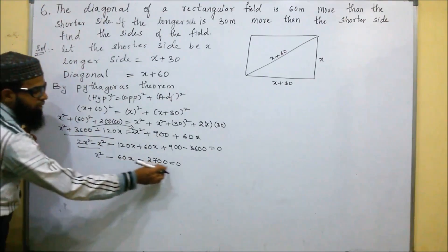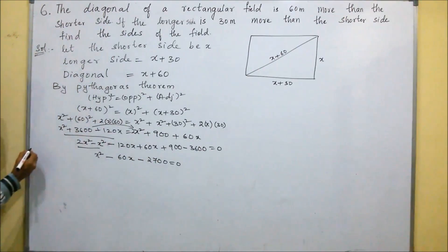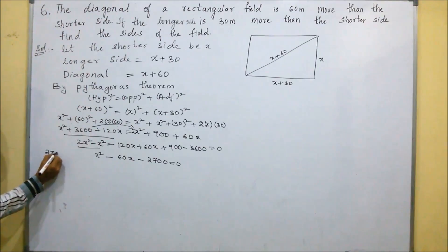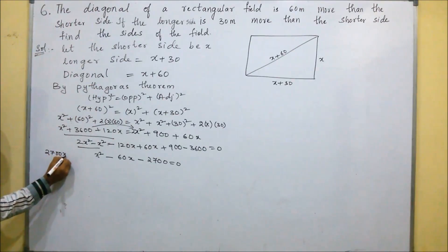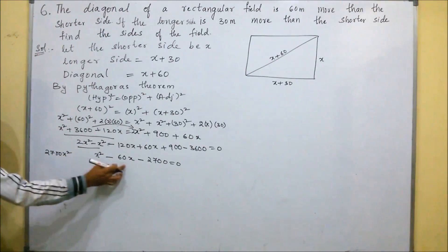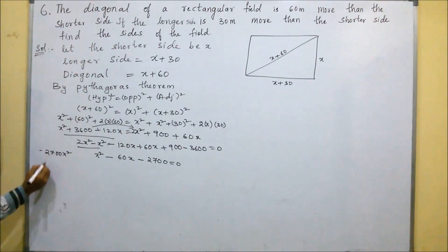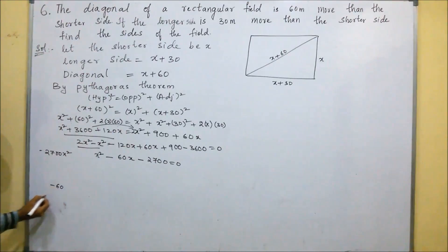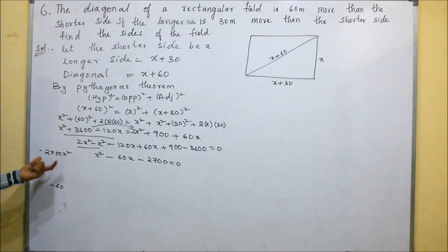For finding the roots, we multiply the first and last terms to get minus 2700x². The middle term is minus 60x. So we need two numbers that multiply to minus 2700 and subtract to give minus 60.